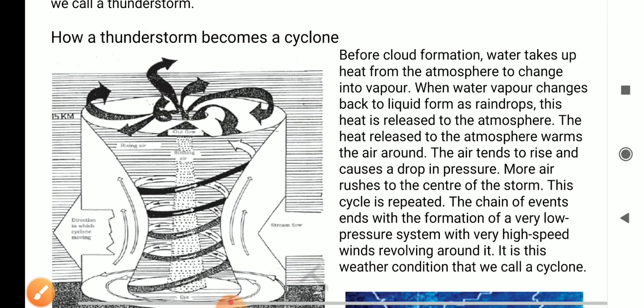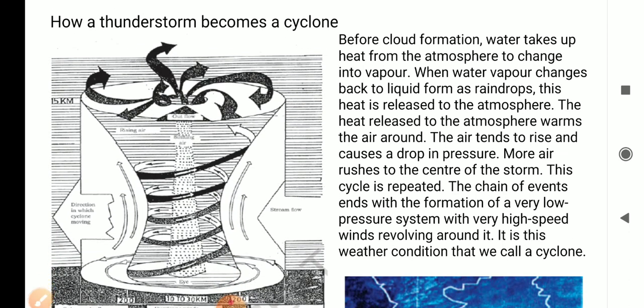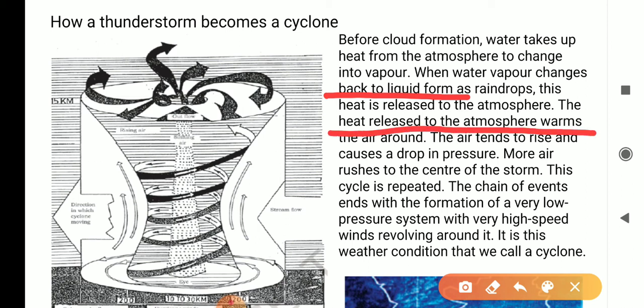Now, how a thunderstorm becomes a cyclone. Before cloud formation, water takes up heat from the atmosphere to change into vapor. When water vapor changes back to liquid form, as rain drops, this heat is released to the atmosphere.